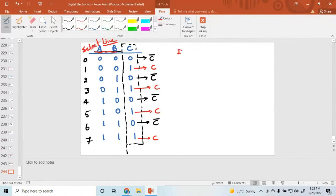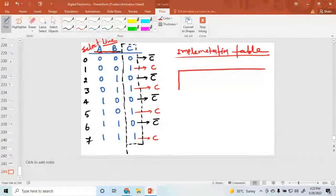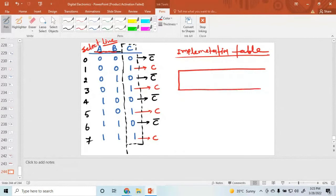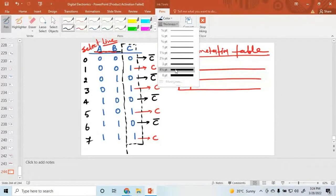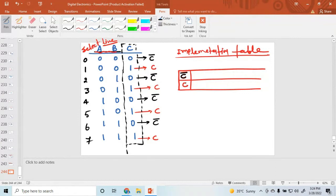That is why I am writing. Then here I am writing an implementation table. So how to draw the implementation table? In the implementation table, the variables are one is c bar and another one is c. Simply I am writing like this.